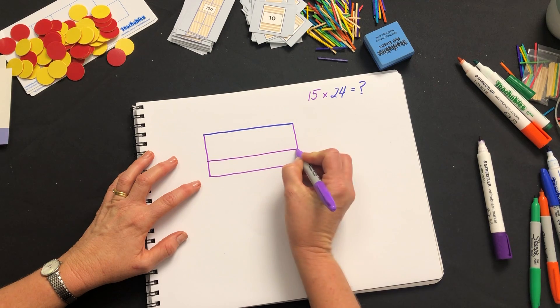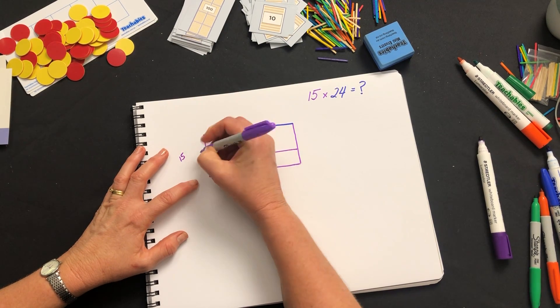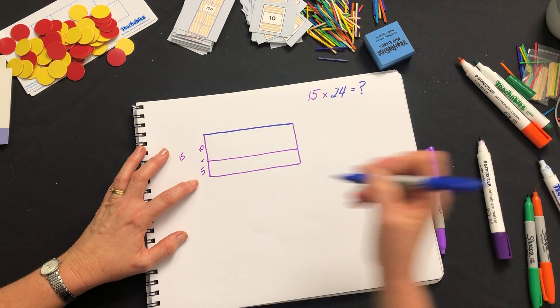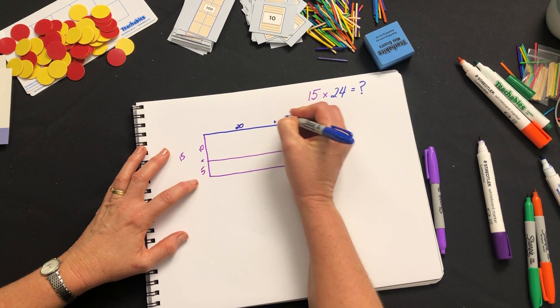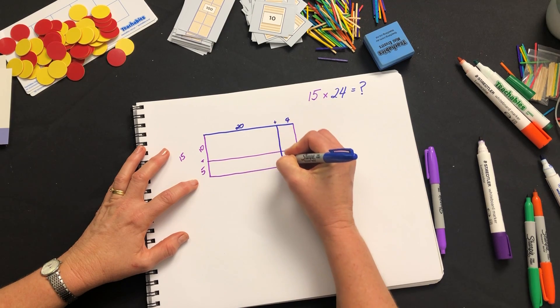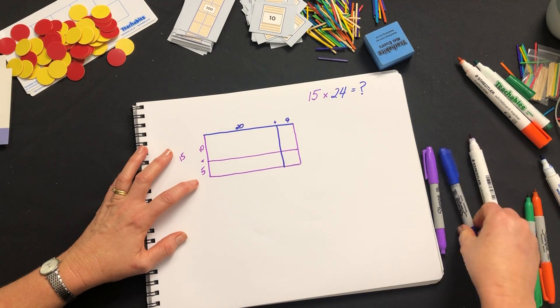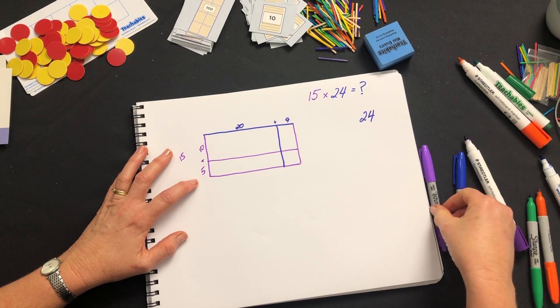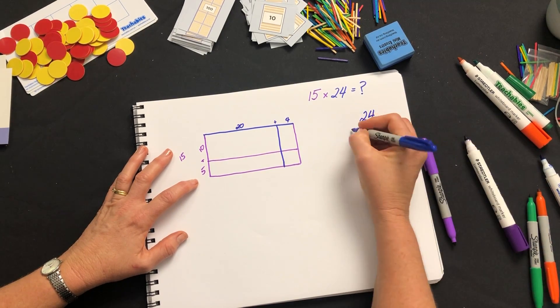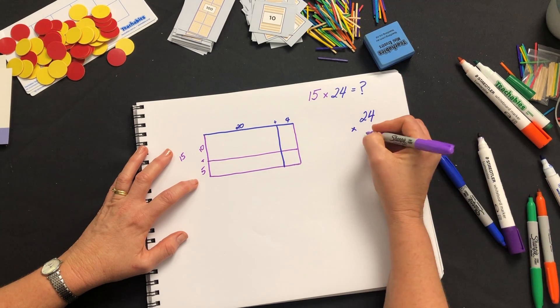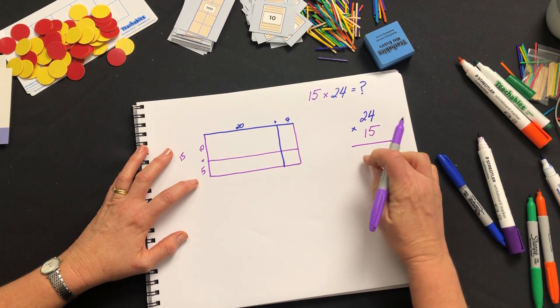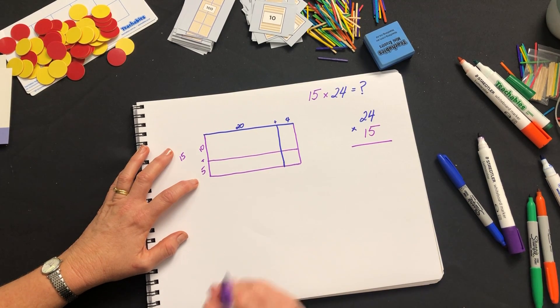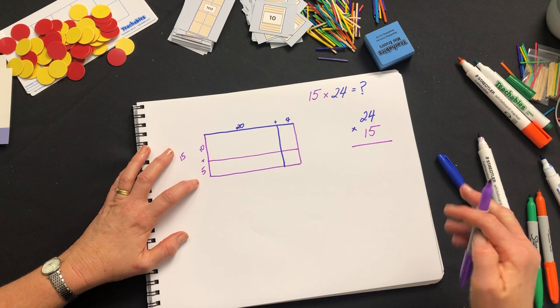But let's go back to my quick sketch here. So we've got 15 which was 10 plus 5 and we've got our 20 plus 4. If I set this out in a more traditional way of setting out a multiplication normally we would leave two lines here. We're going to do it in 4 and I'll explain the reason why when we get to it.